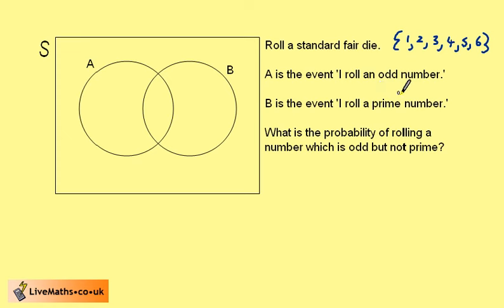A is the event I roll an odd number. So if we look at A, odd numbers must go in here. B is the event I roll a prime number. So prime numbers must go within here.